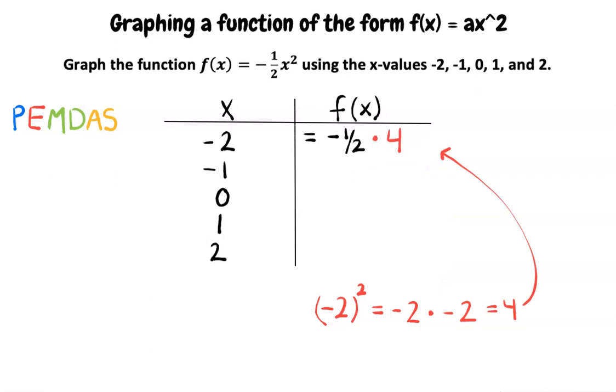Substituting this back into the function, we have -1/2 times 4. Multiplying, we get -4/2, which simplifies to -2. If you would like to use a calculator to solve this, do not forget the parentheses around the -2. So, the first point is (-2, -2).